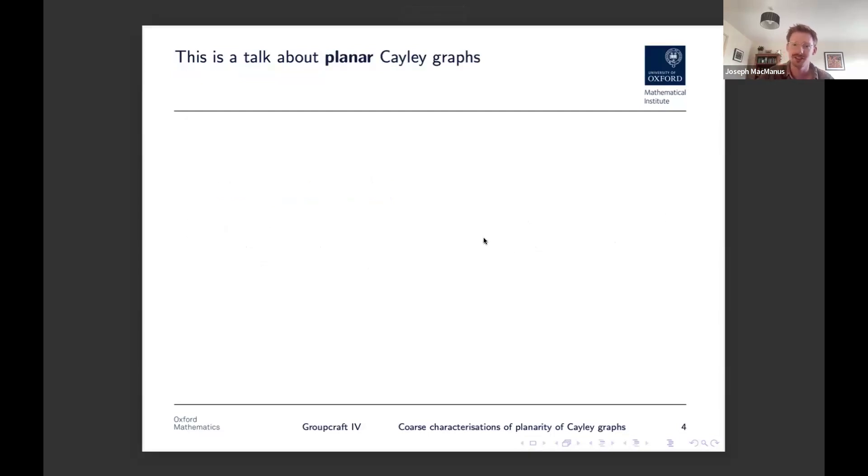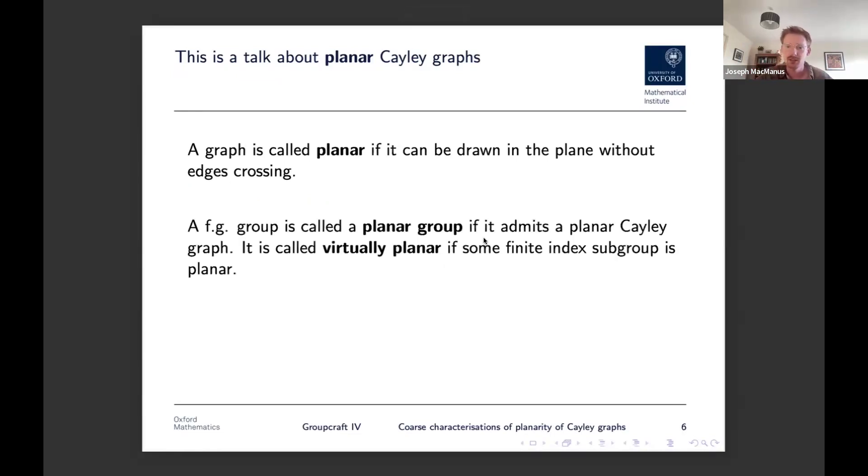But anyway, we'll see lots of examples. But, of course, recall the title, this is a talk about planar Cayley graphs, and so I'm going to talk a little bit about them, and just talk about what is known. Later we'll talk about something a little bit different. But remember that a graph is called planar if it can be drawn in the plane without any edges crossing. And I'm going to use the term planar group to mean a group that admits a planar Cayley graph, and I'll say virtually planar if some finite index subgroup admits a planar Cayley graph.